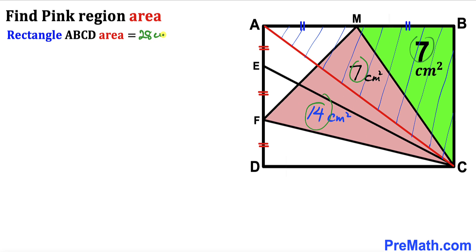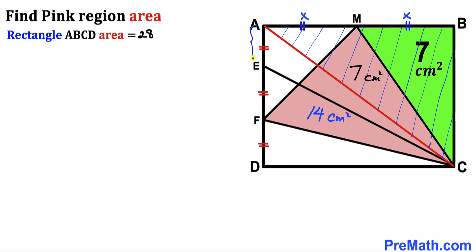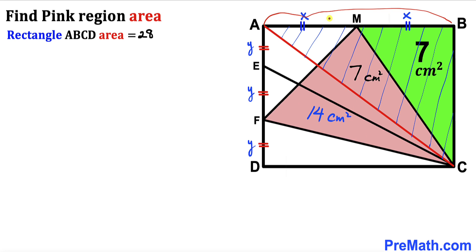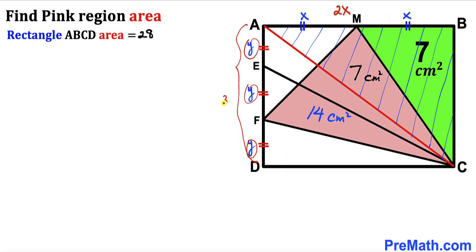Let's label segment AM as X, so BM is also X. Label segment AE as Y, so EF equals Y and FD equals Y as well. Therefore the length of rectangle AB is X + X = 2X, and the width AD is Y + Y + Y = 3Y.